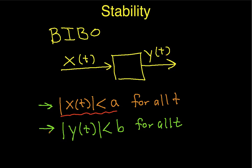Let's do a few simple examples of systems and try to determine if they're BIBO stable. Suppose we have a system where what the system does is multiply the input by a gain, so that y of t is equal to some gain times x of t. The question is, is this a bounded input bounded output stable system?